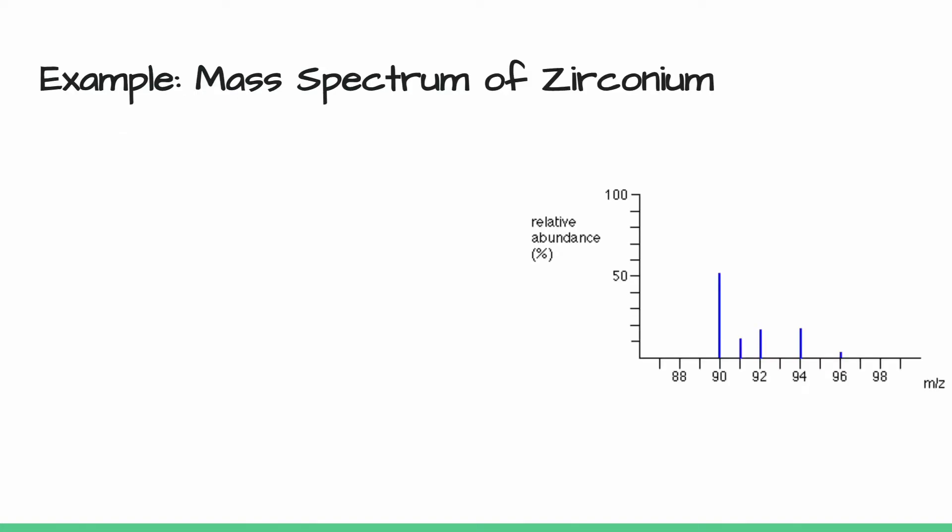Let's take a look at an example. Here's a mass spectrum of zirconium. Now this is really simplified. In real life, this mass spectrum would be way messier, but this is just a simplified version for us.